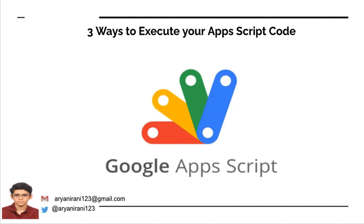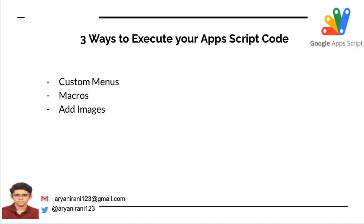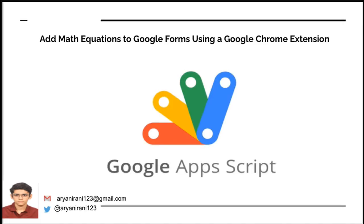In this video I'm going to be showing you three different ways by which you can execute your Google Apps Script code. First we're going to start by creating custom menus, followed by macros, and then adding images and assigning a script to it. Let's get started.